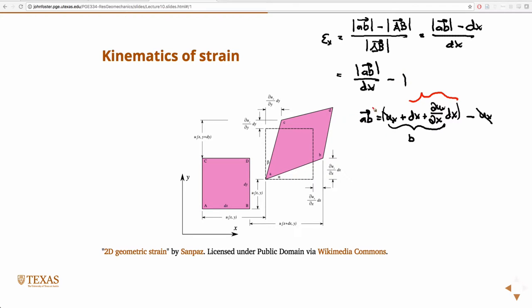So, this is the AB, the component of ABX, component of AB in the X direction. And so, then I need to square that. And so, then ABX is equal to DX plus partial U.